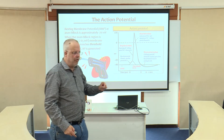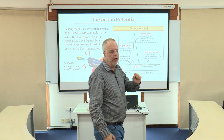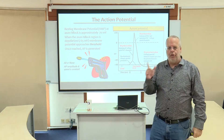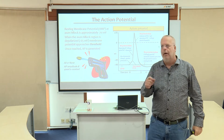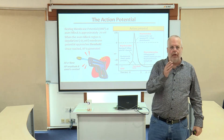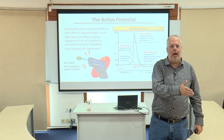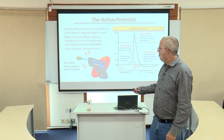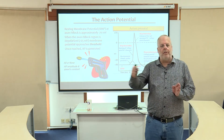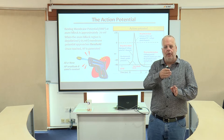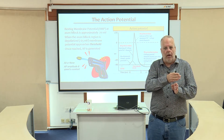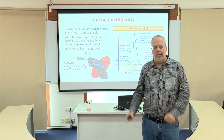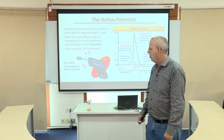An action potential is what we call an all-or-none event. It's like shooting a gun — you can't kind of shoot a gun. You do or you don't. It's binary. The same is true for an action potential: it either happens or it does not. There's no middle ground. And every time an action potential is generated, it occurs in the same fashion — it has the same amplitude and the same speed, or conduction velocity. It travels down the axon in the same exact fashion every single time.